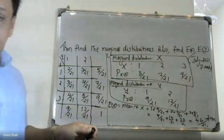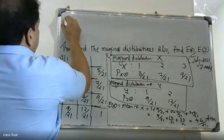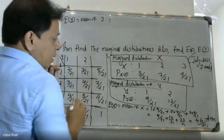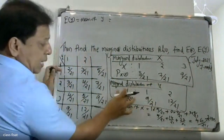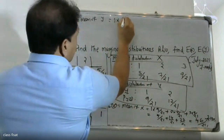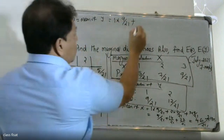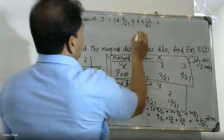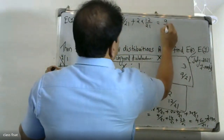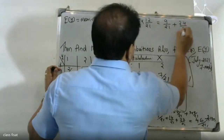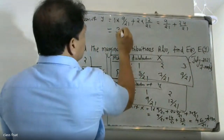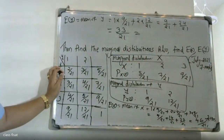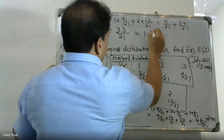Now for the expectation of Y, the mean of Y. Using the marginal distribution of Y: E(Y) = 1 × (9/21) + 2 × (12/21). That equals 9/21 + 24/21, which gives 33/21, simplified to approximately 1.571.